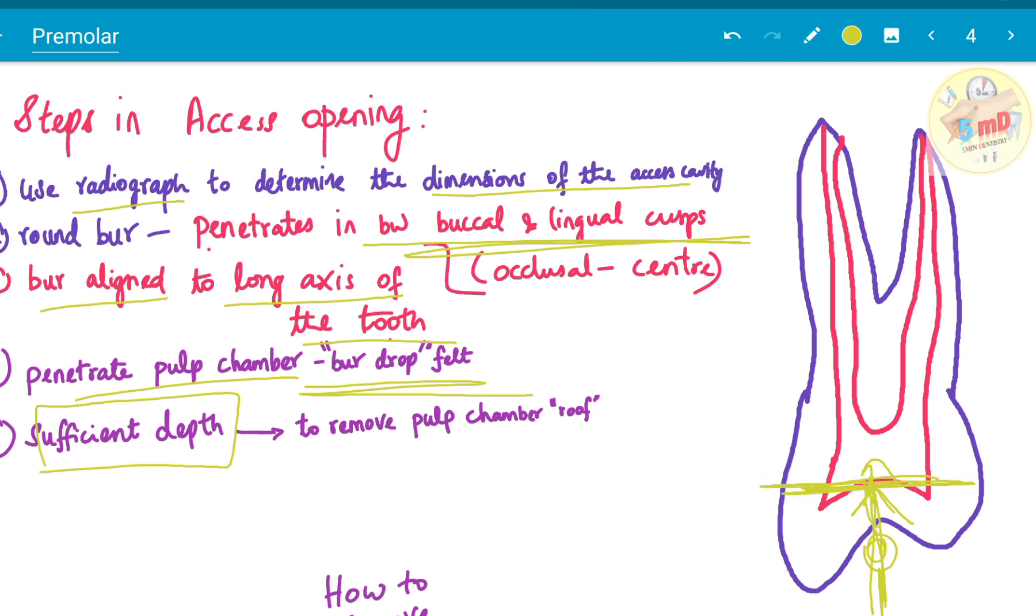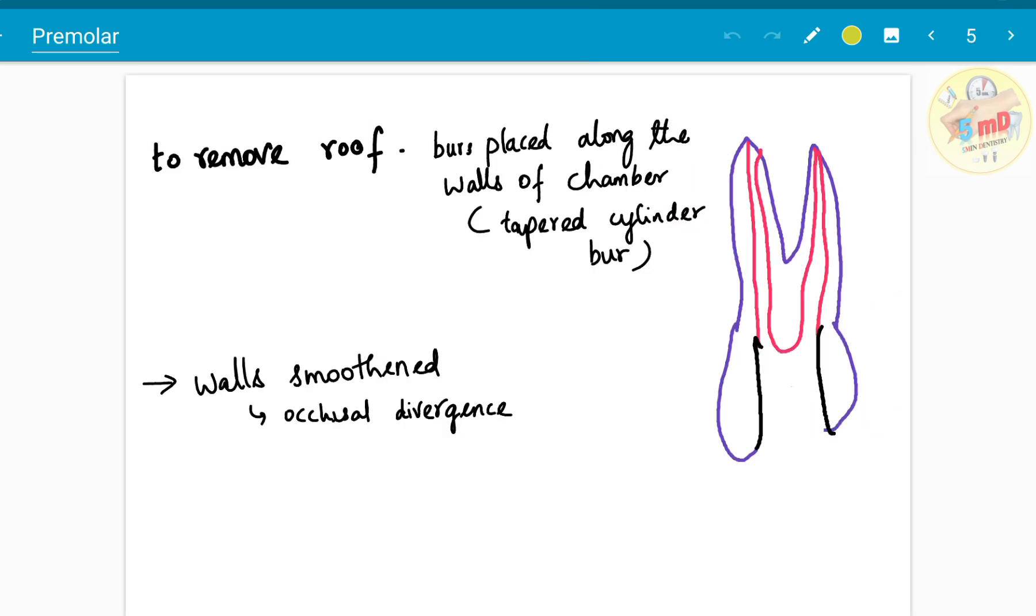While removing the pulp chamber roof, you should remember the following points. To remove roof, burrs are placed along the walls of the chamber. The usually tapered cylinder burr is preferred here. And imagine in a three-dimensional aspect, you are completely removing the walls of the chamber. Therefore, you are completely de-roofing the pulp chamber. Then walls are smoothened with occlusal divergence.